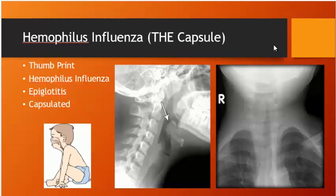Haemophilus influenzae: two X-rays shown. Epiglottitis shows the thumbprint sign. The steeple sign is seen in laryngotracheobronchitis (croup) — subglottic narrowing caused by paramyxovirus (parainfluenza), shaped like a church steeple. For epiglottitis from H. influenzae: capsulated, next step is to intubate — call the anaesthetist.